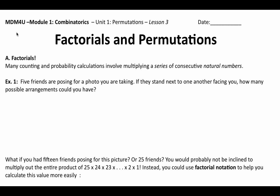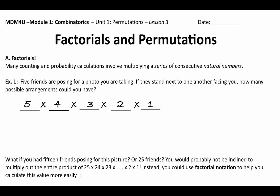Let's do an example to refresh what we've been doing. 5 friends are posing for a photo, standing in a line facing you. How many possible arrangements could you have? You've got 5 friends, 5 spots. In the first position you have 5 choices, then 4, 3, 2, 1. So you get 5 times 4 times 3 times 2 times 1, giving a total of 120 possible photo arrangements.